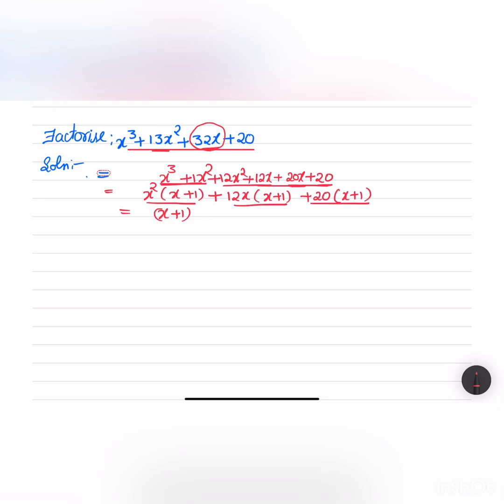So let us take out x + 1 and we are left with x² + 12x + 20 in the bracket. Now we have to factorize this x² + 12x + 20 by splitting the middle term. If you multiply these two, we will get 20x². And if we add or subtract, we have to get 12x. So it is 10x and 2x, both are plus. 10 times 2 is 20 and 10 plus 2 is 12. So x² + 10x + 2x + 20.